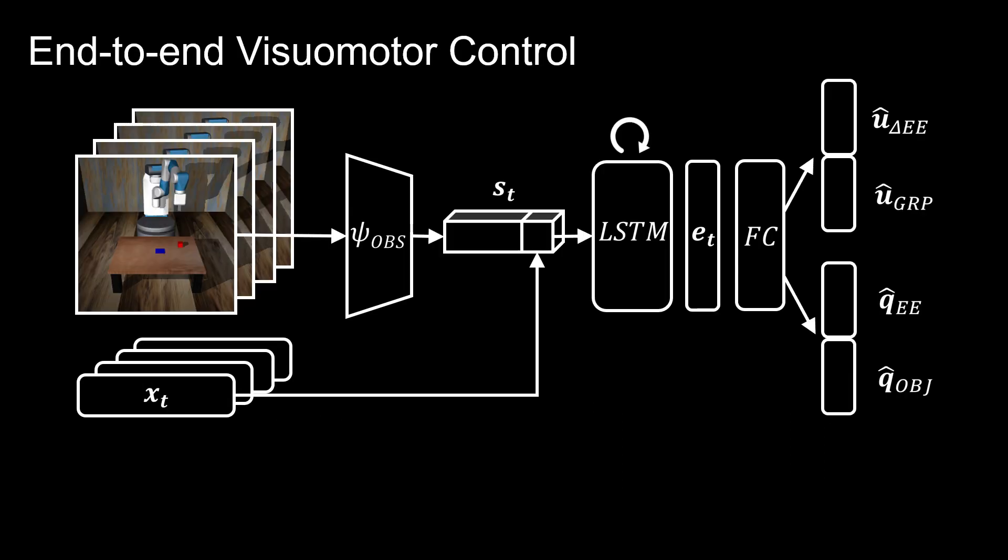Our work is based on end-to-end visual motor control, an effective means of achieving manipulation tasks. At each time step, the model takes a sliding window of images and robot states as input, and maps them to a delta end-effector position command and gripper command, and some auxiliary terms.